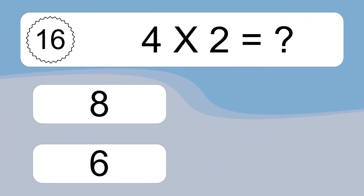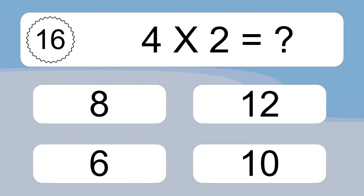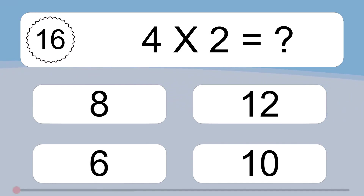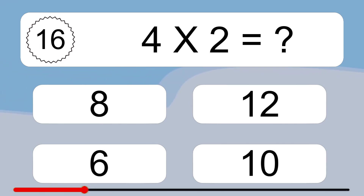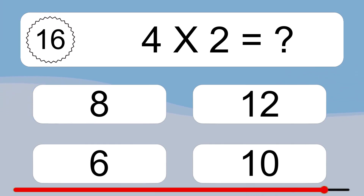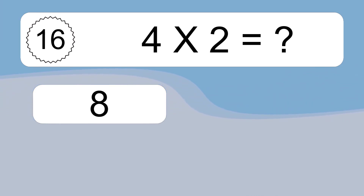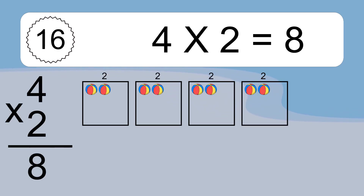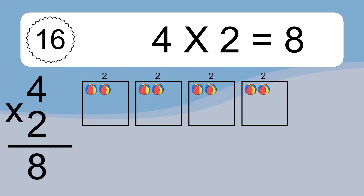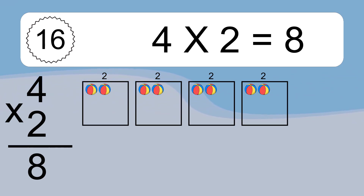4 times 2 equals what? We have 4 boxes, and each box has 2 colorful balls inside. If you count all the balls in all the boxes together, you will have 4 times 2 balls. This equals 8 balls.